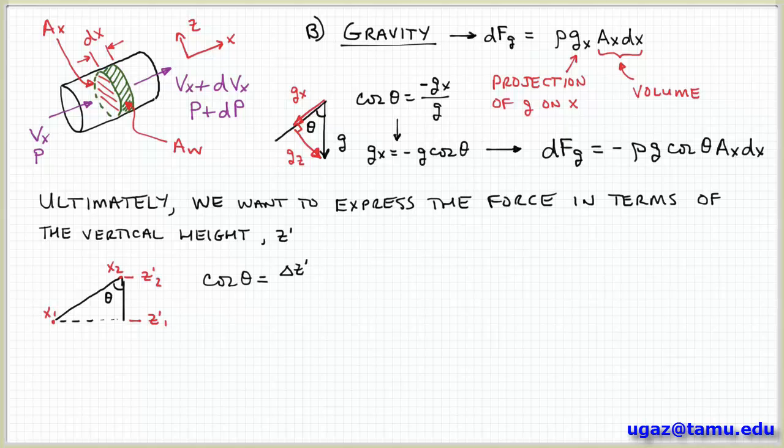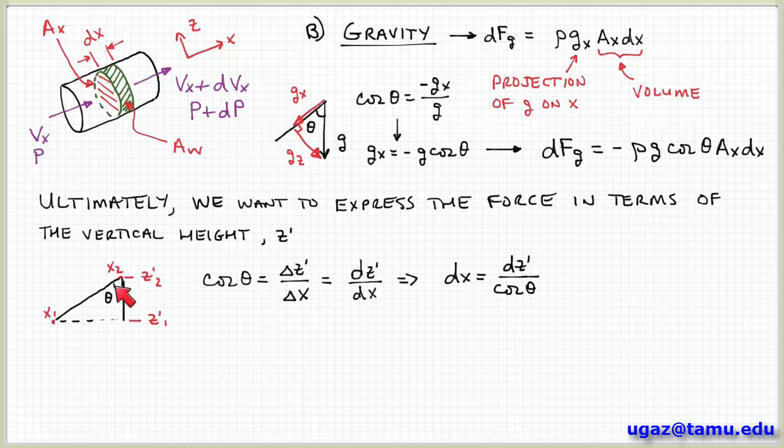So again, if I look at this right triangle, cosine θ is Δz prime over the hypotenuse Δx, because this is the opposite now and this is the hypotenuse because the right angle is down here. Or I could say dz prime over dx if this is a small enough difference between these two positions. So then I can solve for dx and I get that dx is dz prime over cosine θ.